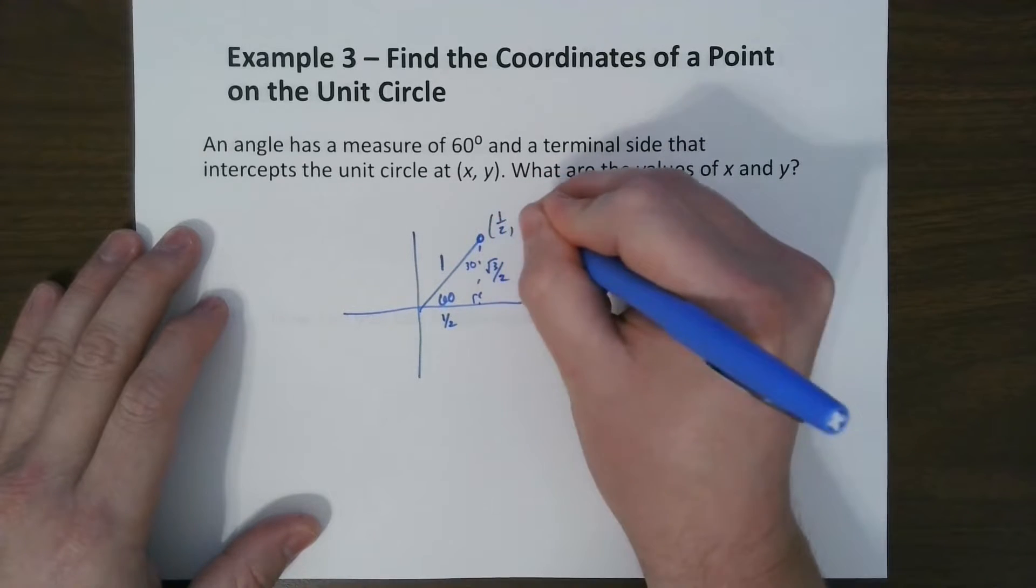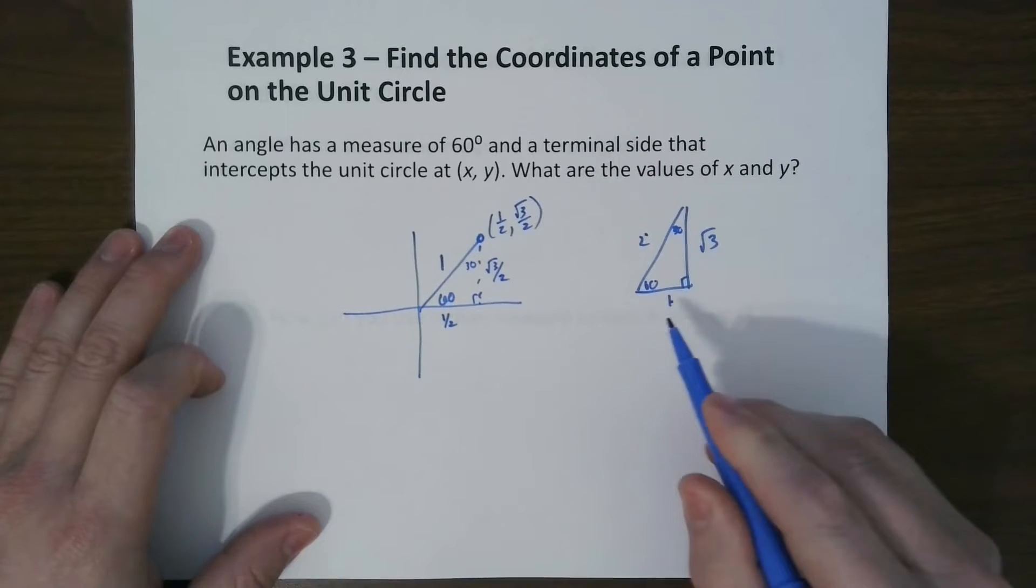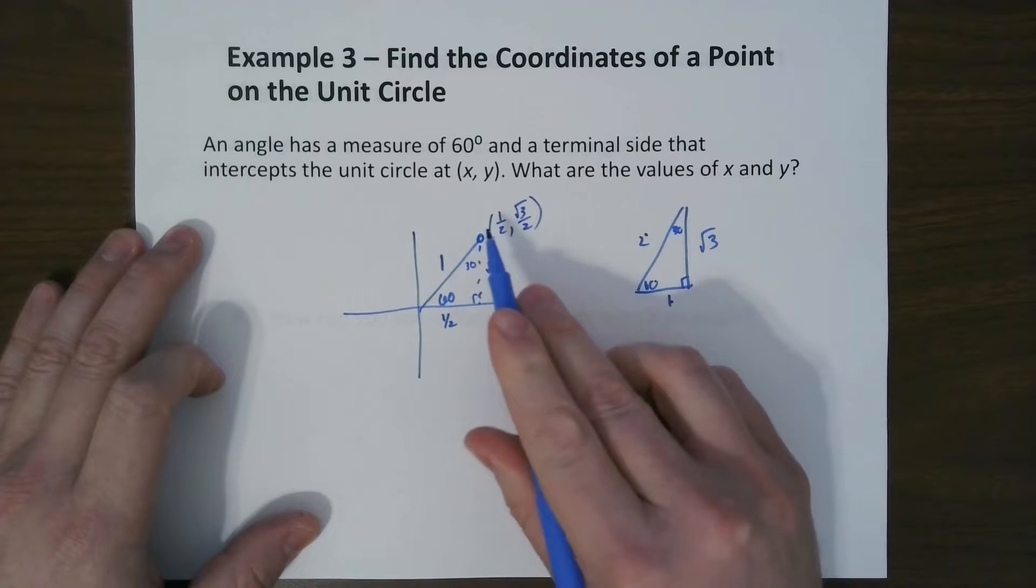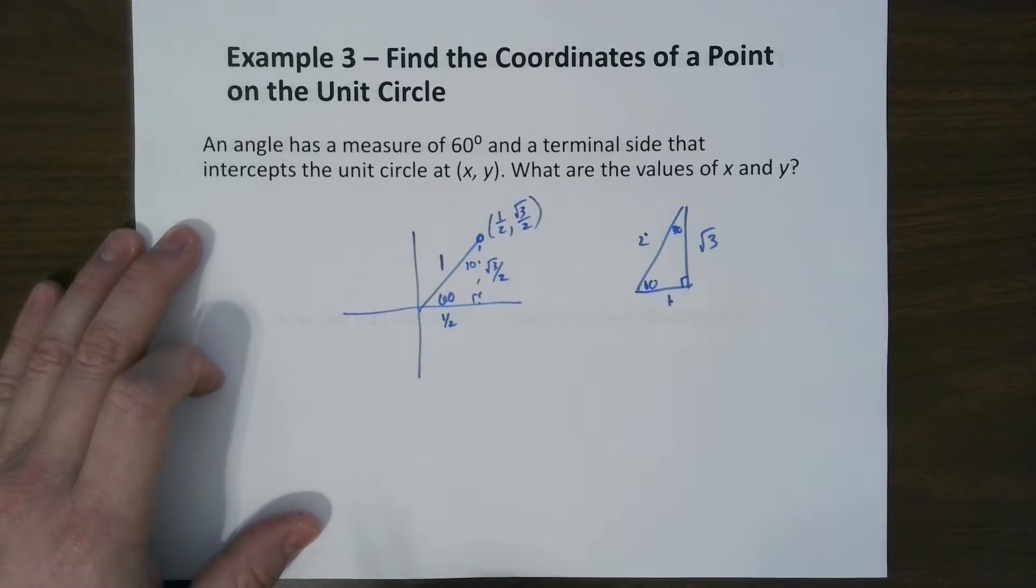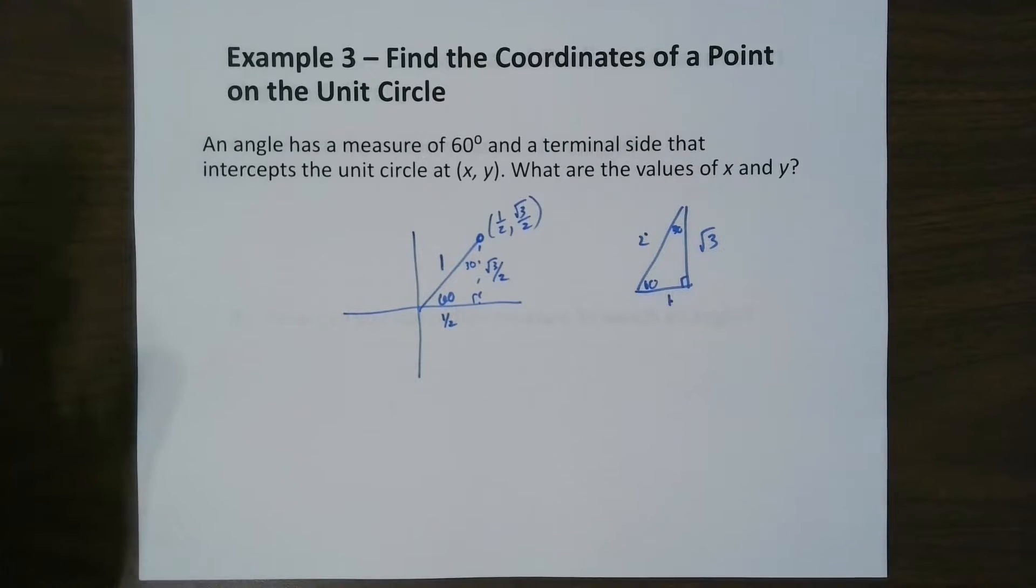So 1 half and radical 3 over 2. Or you can look at this one and go, well, it's 1 over 2 for cosine and radical 3 over 2 for sine. Either way, it works.